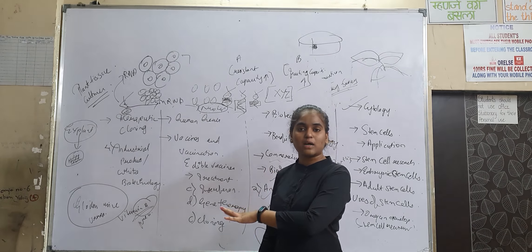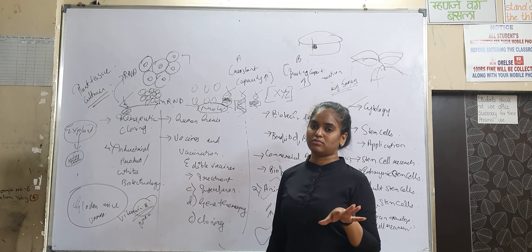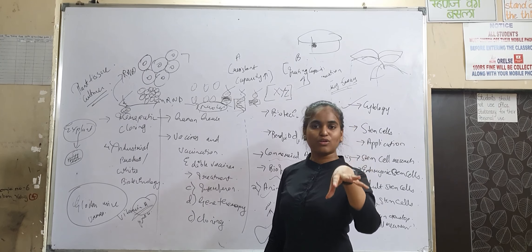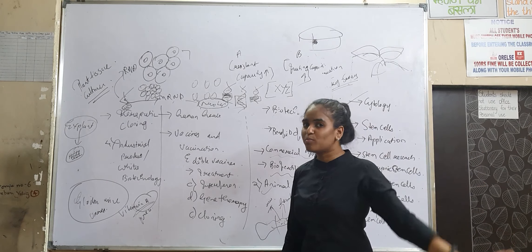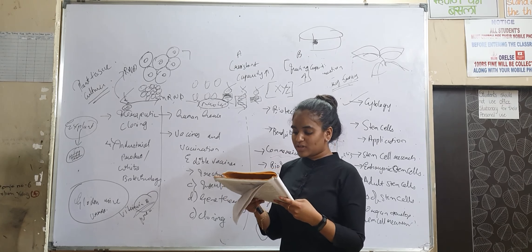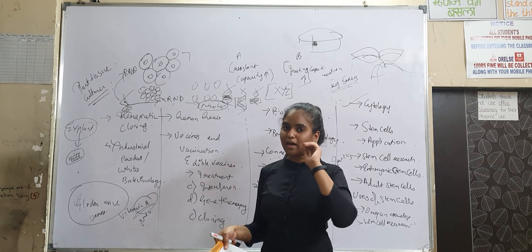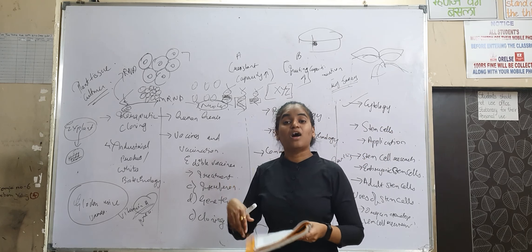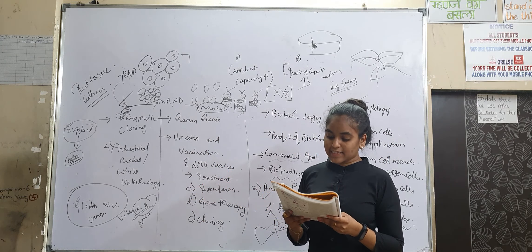As I gave the example earlier, one of the example called as BT cotton. In BT plants also you insert toxin gene, so that when insect eats that plant, it automatically dies. That is one of the use of this gene manipulation. Gene manipulation basically means manipulate, manipulate means modify according to your need.